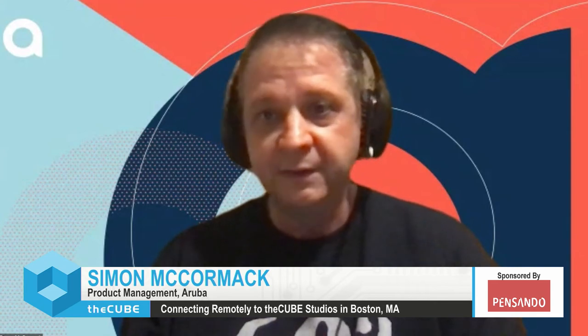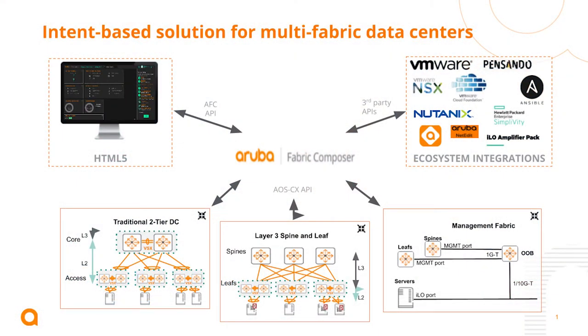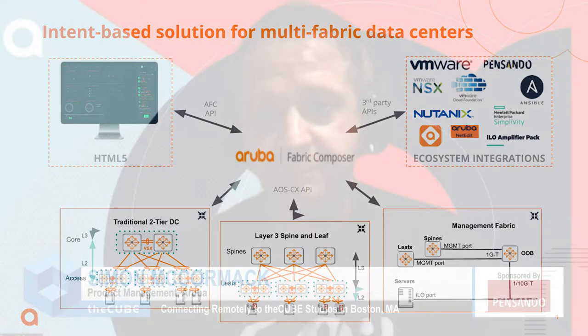Can you tell us what's the primary value prop that AFC brings to its customers? Sure. Aruba Fabric Composer is orchestration and management for the Aruba-wide switching platform, primarily for data centers. I'll give you three key ones. In data center networking, there's a lot of complex topologies — leaf spines, overlays, underlays, EVPN, OSPF, BGP. Fabric Composer can really simplify through intent-based workflows the deployment and management of these fabrics, either interactively through a UI or fully API-driven, making it dead easy to deploy and scale.